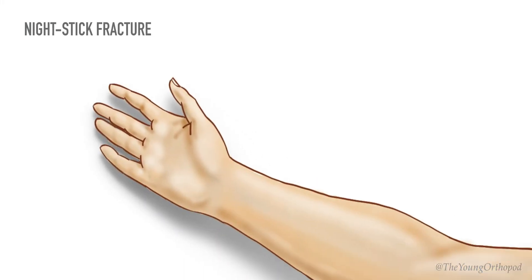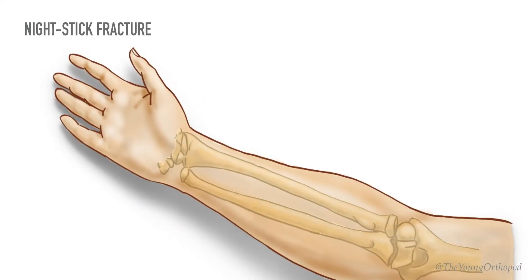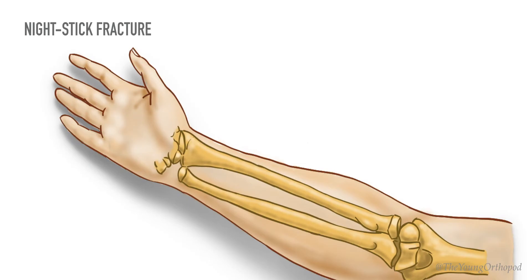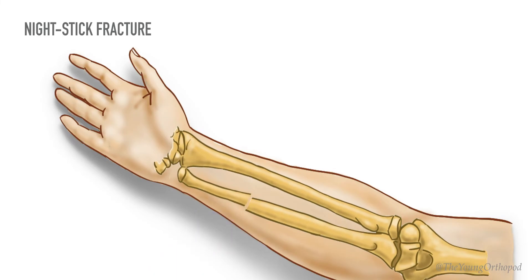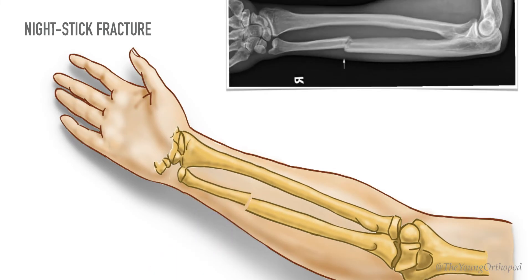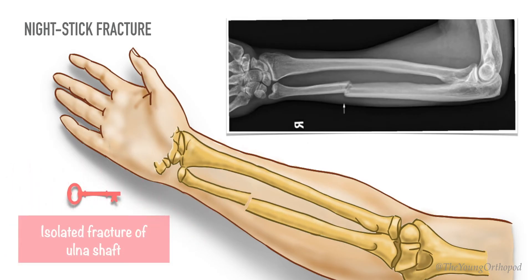The nightstick fracture is an isolated fracture of the shaft of the ulna resulting from direct trauma along its subcutaneous border. Classically, as a victim attempts to protect their head from an assault, they sustain a nightstick fracture.